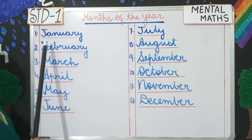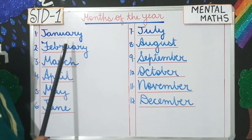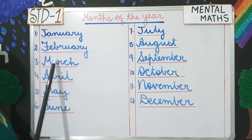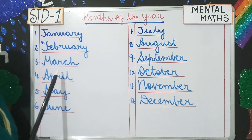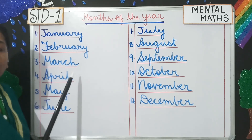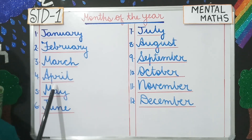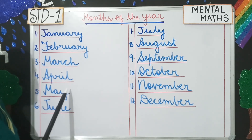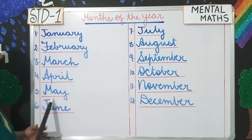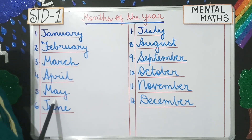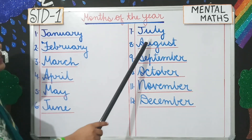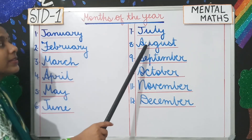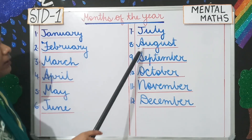Months of the year. January is the 1st month of the year. February is the 2nd month of the year. Then we have March — March is the 3rd month of the year. Then comes April — April is the 4th month of the year. May is the 5th month of the year. Then we have June — June is the 6th month of the year. Then we have July — July is the 7th month of the year.